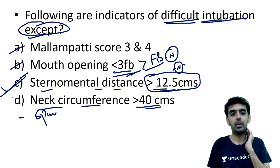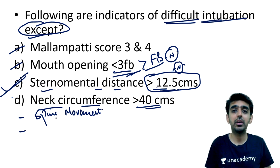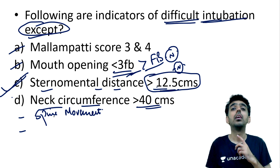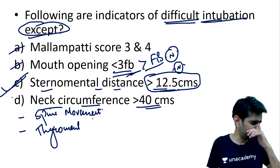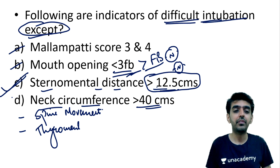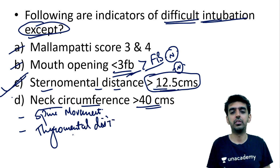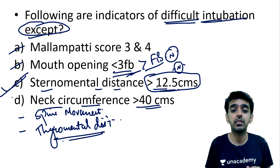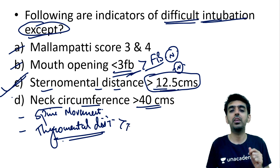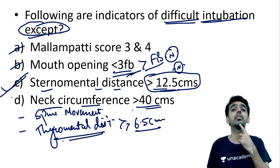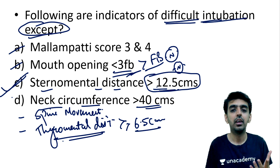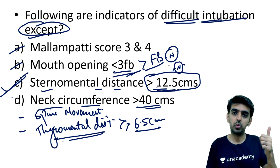Other parameters for a difficult airway include Mallampati score, mouth opening, sternomental distance, neck circumference, cervical spine movement, and thyromental distance. The thyromental distance for a normal airway must be equal to or more than 6.5 cm. The sternomental distance is almost double that — 12.5 cm.